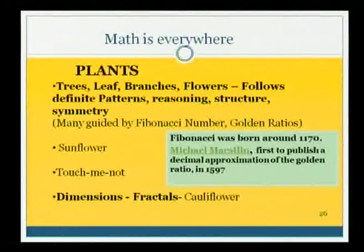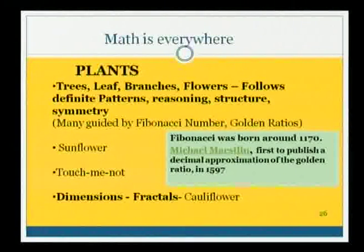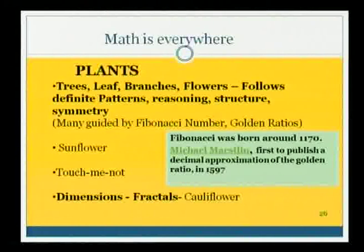Similarly, a song — which notes in the song attain this proportion — it attracts our ears, and that song appears to be good for us. Similarly, this paper size — we call A0, A1, A2, A3, A4, A5 — all these are in the proportion of the golden ratio. So many things are there with golden ratio, and we do not know that.